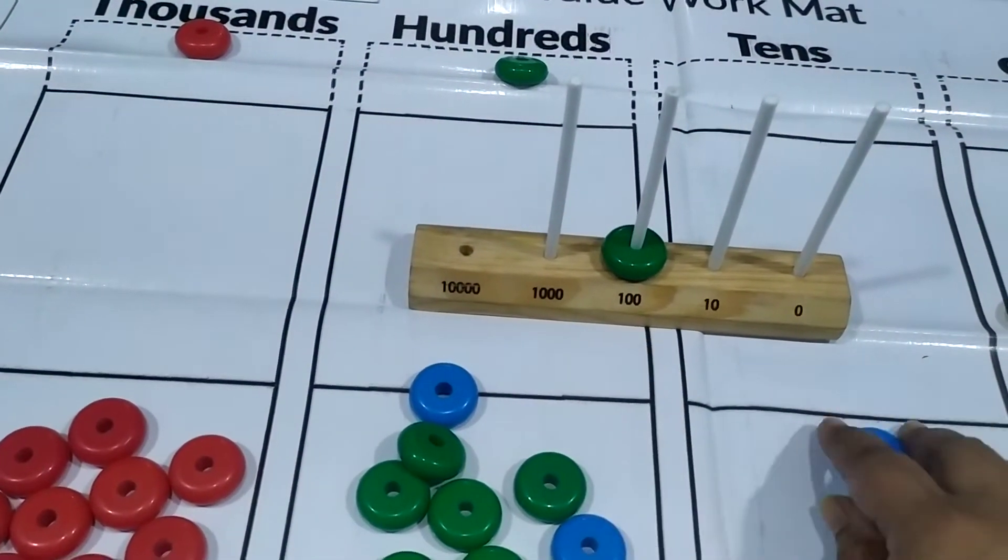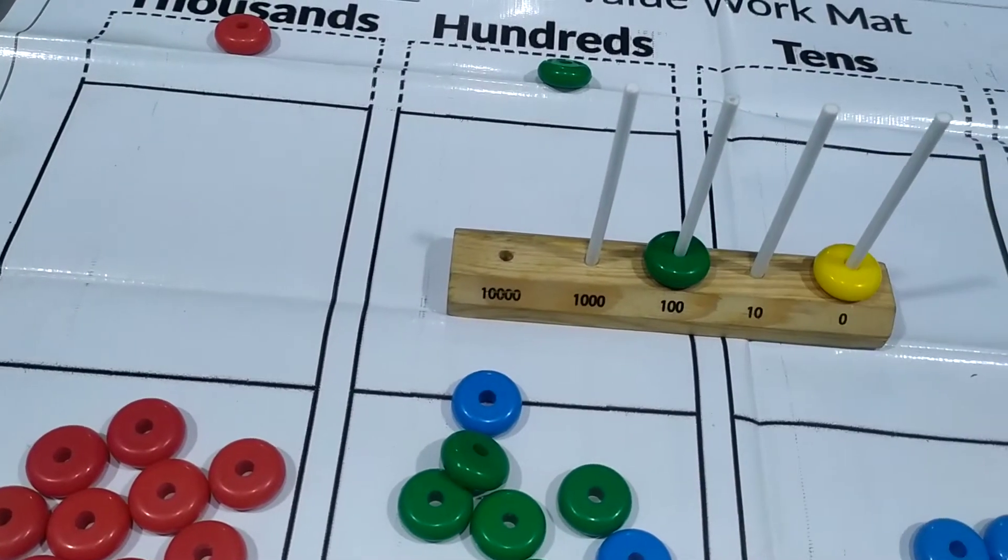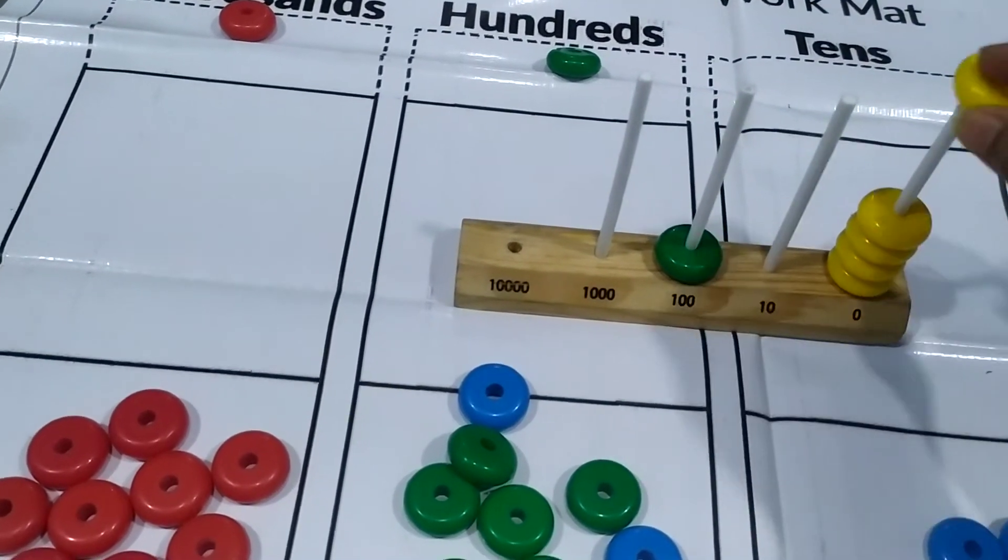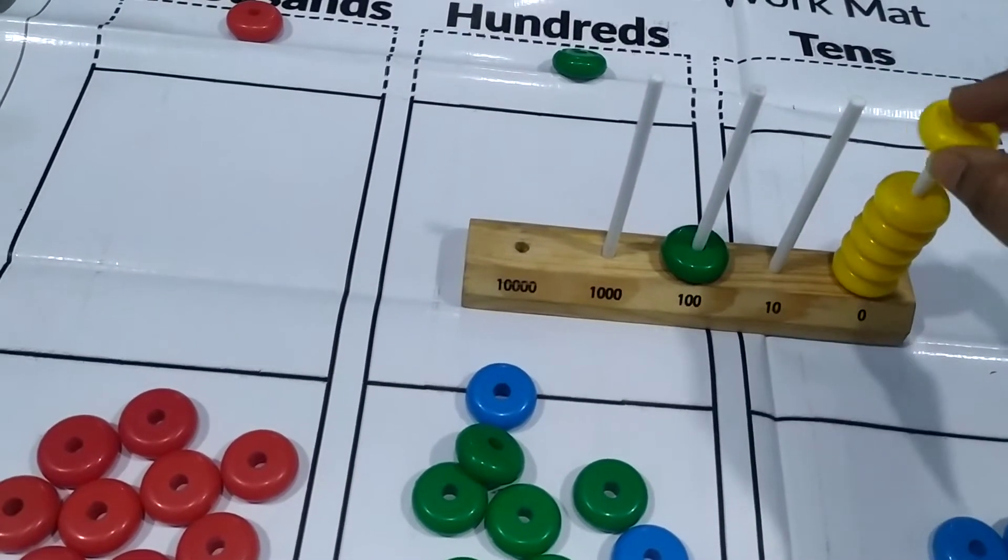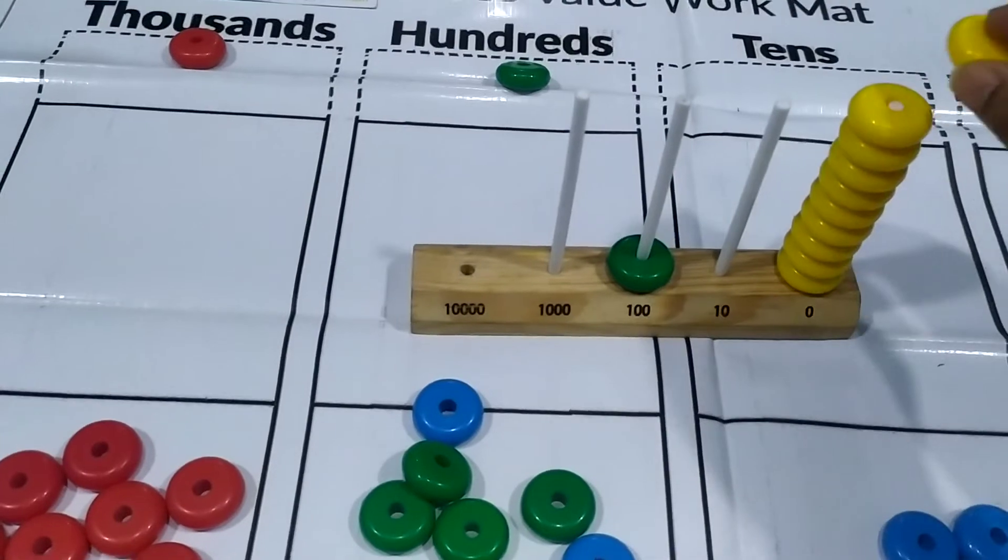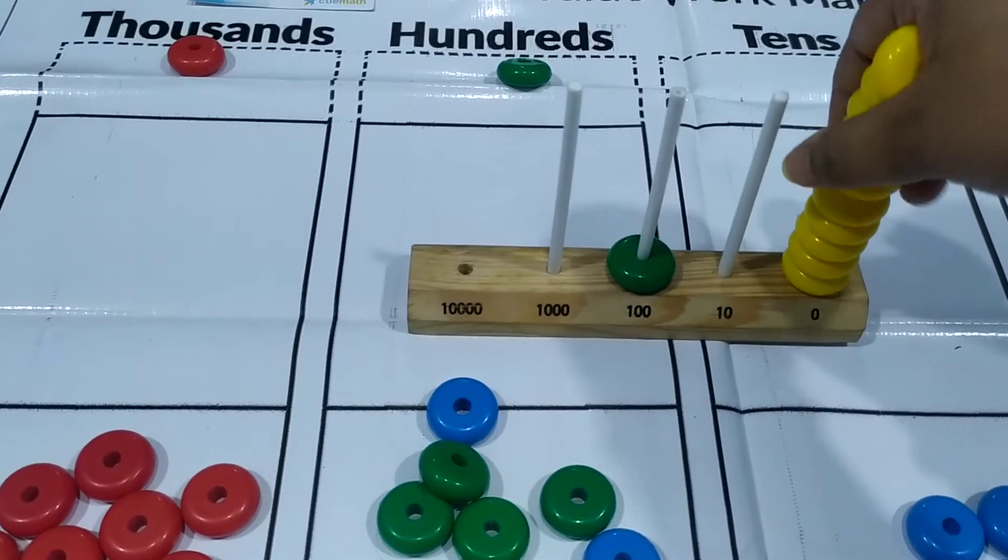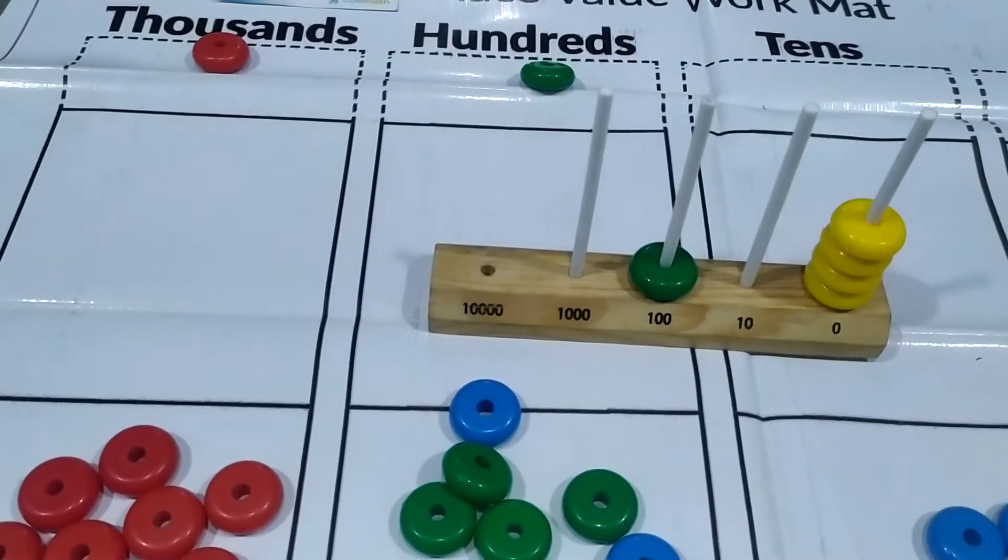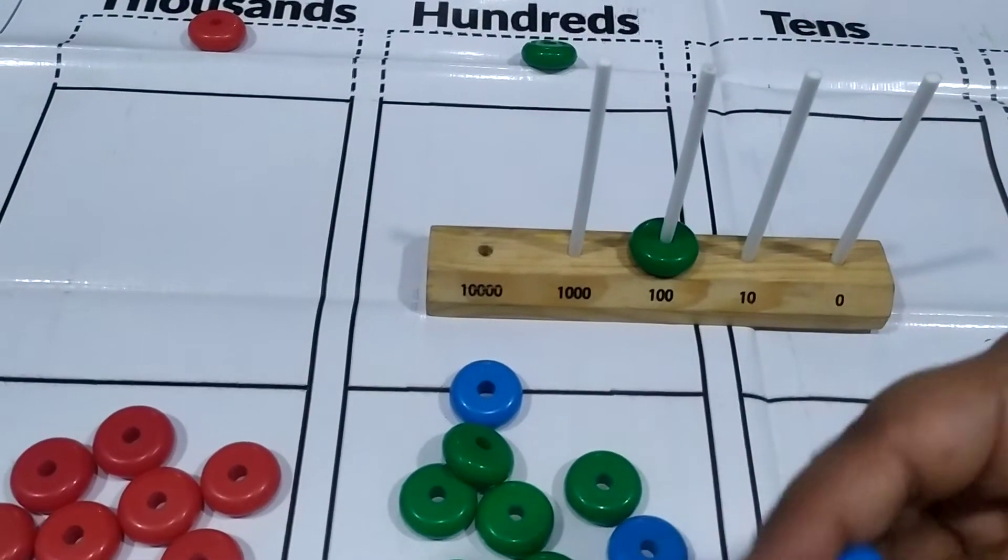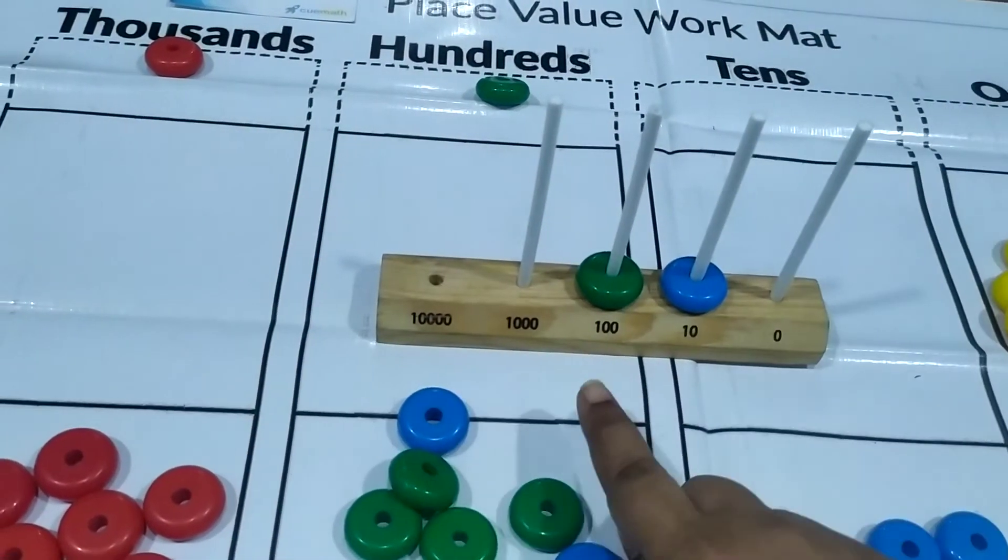So the same way, one hundred, one hundred one, one hundred two, one hundred three, four, five, six, seven, eight, nine and ten. Once it has become a ten, we will remove it. Here we go. And here we are with a ten. We replace it. We will replace these with one tens. So one hundred ten.